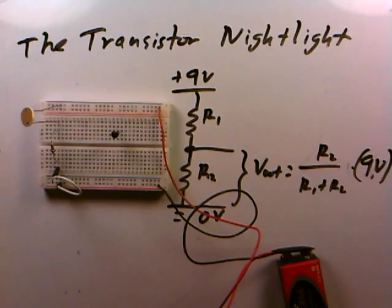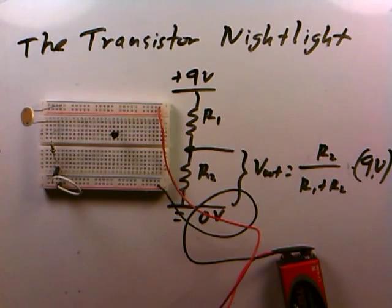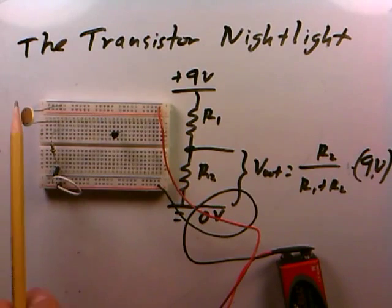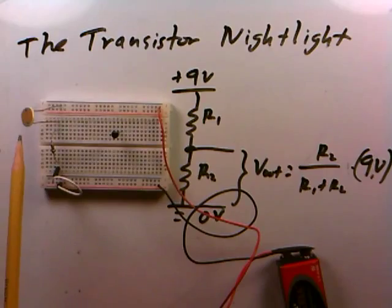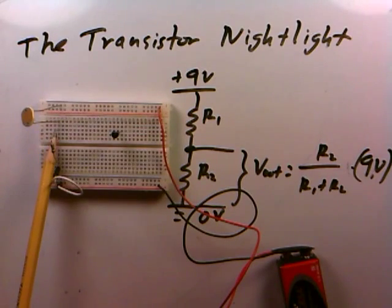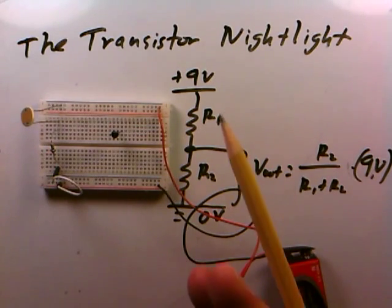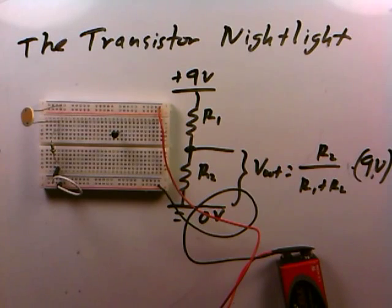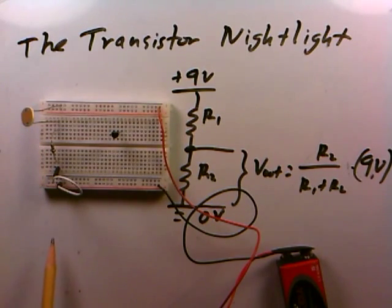If the voltage is under 0.6 volts the transistor will be off and no night light will come on. If the voltage rises above 0.6 volts then the transistor will be on and we can turn the night light on. So we'd like to configure this voltage divider so that when it's dark out the voltage will be above 0.6 volts to turn the transistor on, and if it's too bright out the voltage will be below 0.6 volts so the transistor and light bulb will be off.